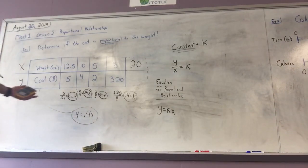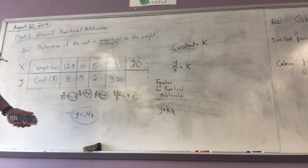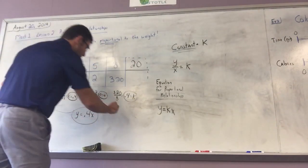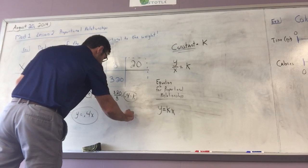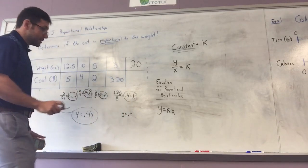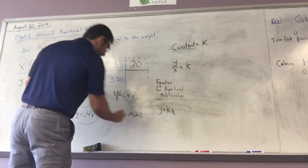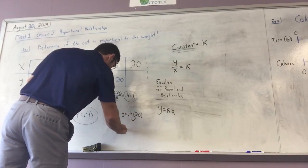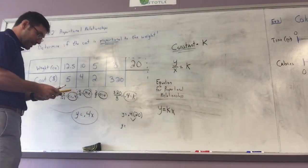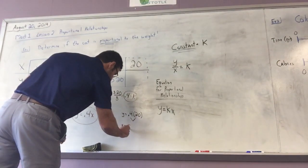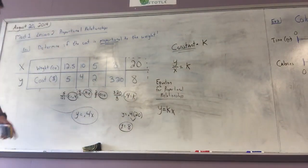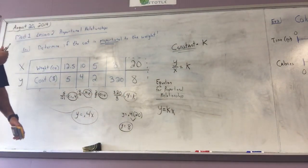To find a y value, I substitute in. We know K and we have an x value. So for 20 ounces, I say y equals 0.4 multiplied by 20, which gives me 8. So for 20 ounces, it will cost 8 dollars. This equation helps me find any value I want.